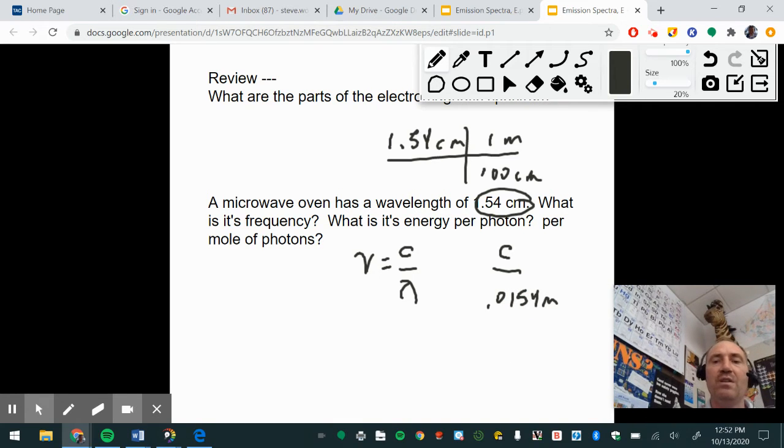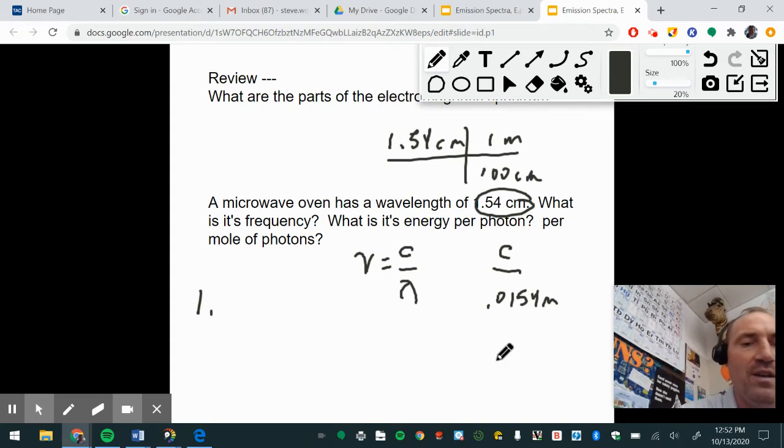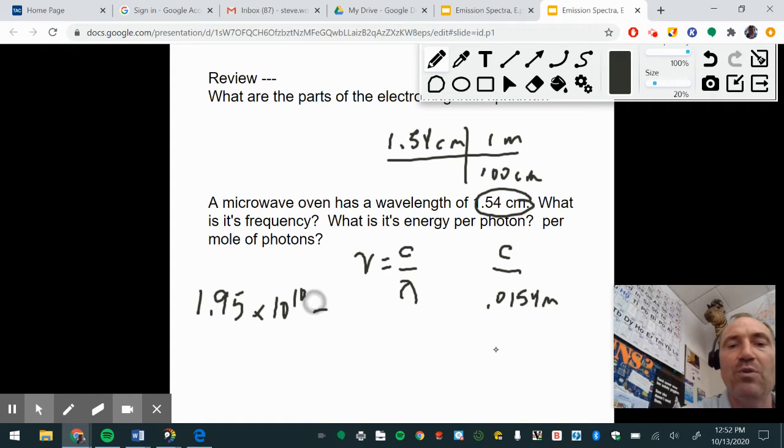Then you're going to get your trusty calculator out and you're going to type in the speed of light, 2.998E8, or you have it stored in your calculator, divided by 0.0154, and you get a frequency of 1.95 times 10 to the tenth. And you could either have it as per second, which is the same thing as hertz.